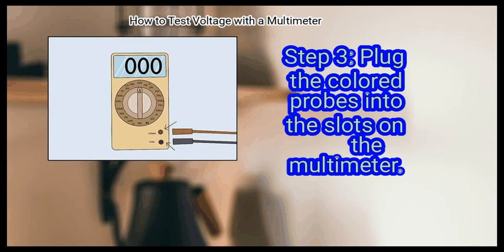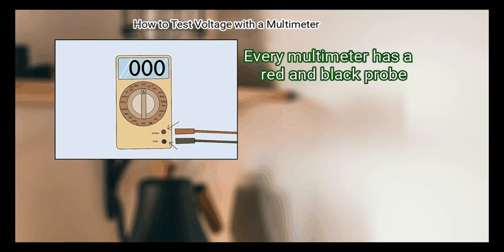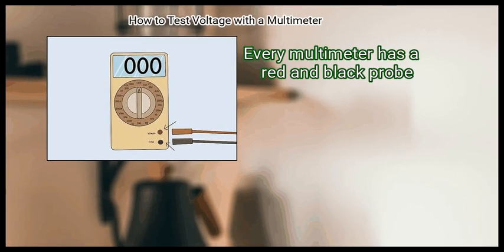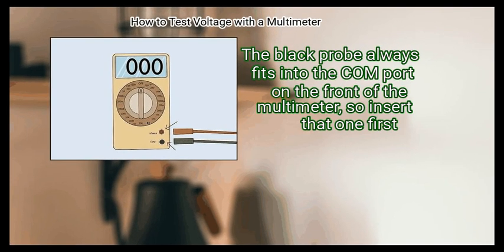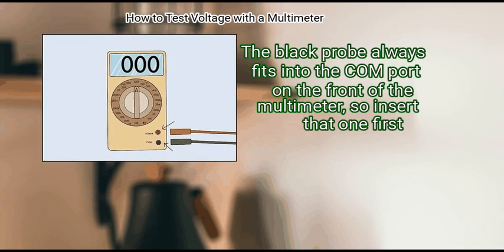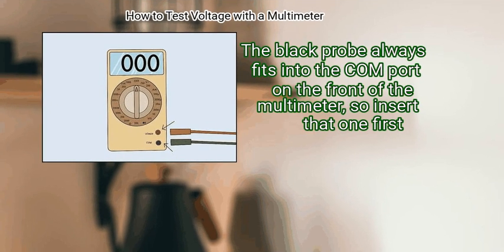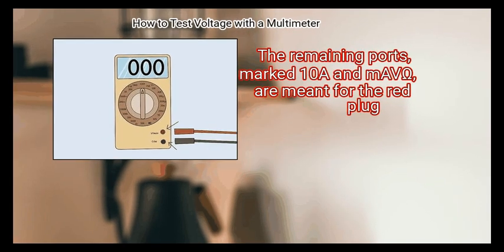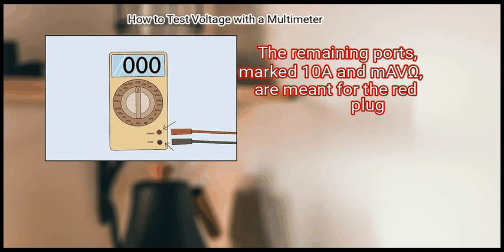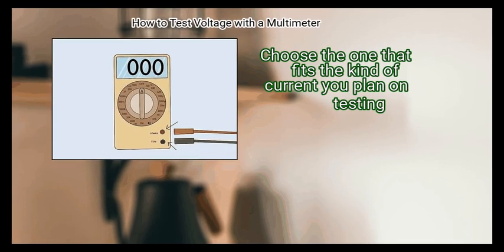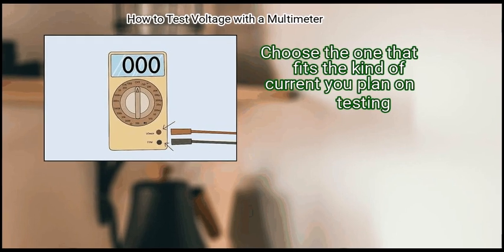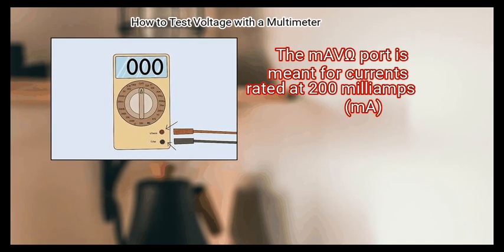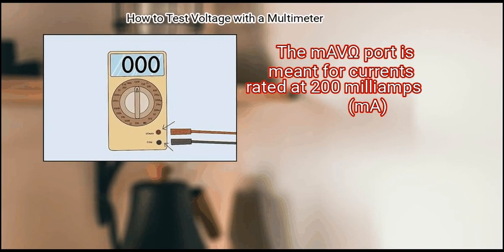Step 3: Plug the colored probes into the slots on the multimeter. Every multimeter has a red and black probe. The black probe always fits into the COM port on the front of the multimeter, so insert that one first. The remaining ports, marked 10A and mA V Omega, are meant for the red plug. Choose the one that fits the kind of current you plan on testing.